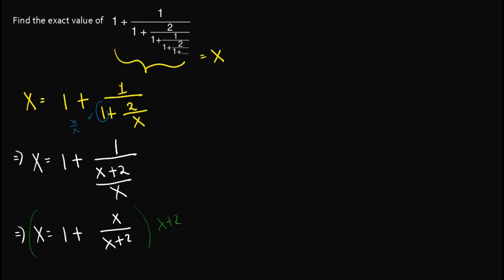So this one would become x times x plus 2 equals x plus 2 plus x. Since the denominator out here would cancel out.